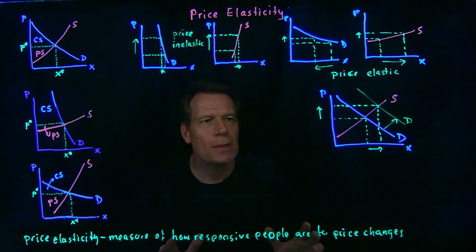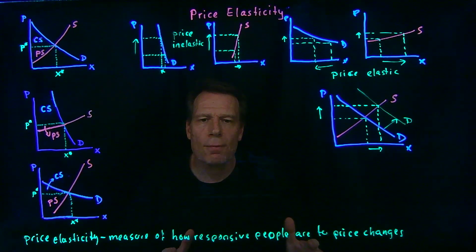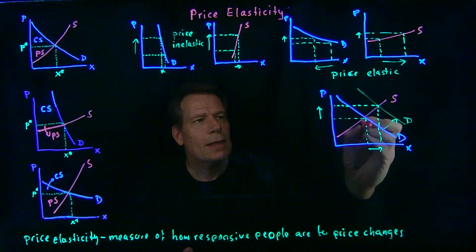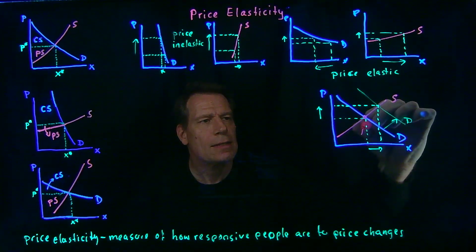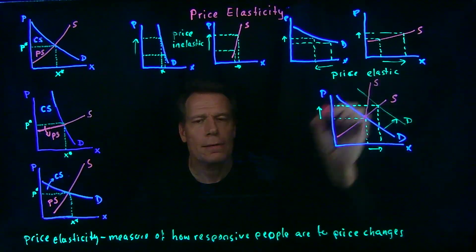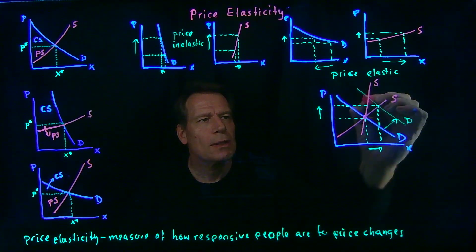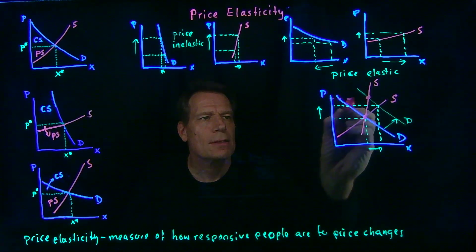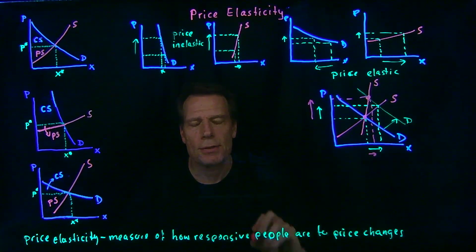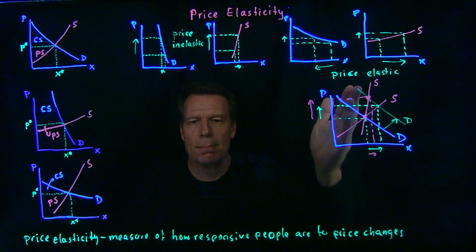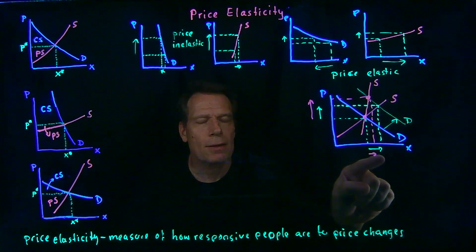But how can we tell how big the price change and the quantity change will be in this market? It depends on the price elasticity of one of those curves. Suppose the supply curve had been more price inelastic — suppose we had a steep supply curve through the original equilibrium. Then when the demand curve shifted, we'd get to a new intersection where the price would have risen more and the quantity would not have increased by as much. So the more price inelastic the supply curve is, the greater the impact of a shift in demand will be on price, and the smaller the impact will be on quantity.